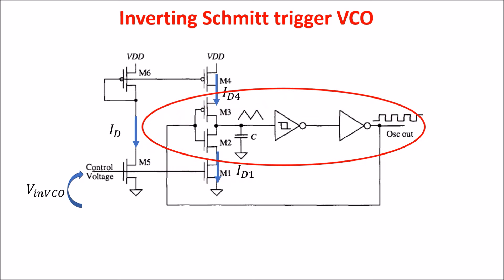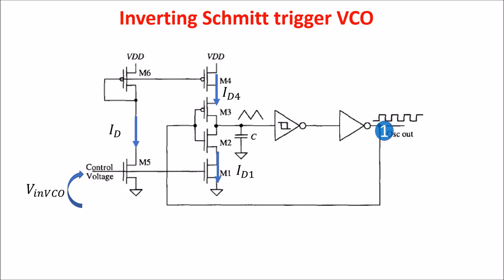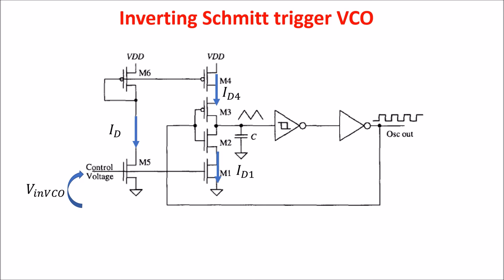Looking at this portion of the circuit, we have basically three inverters in series — one of which is the Schmitt Trigger — plus positive feedback. This is similar to a ring oscillator, which is an unstable circuit: when the output is high, the feedback drives the input of the first inverter high, so its output is low, the Schmitt Trigger output goes high, changing the output to low, and so on. The circuit is unstable, but it maintains this instability through the Schmitt Trigger and the capacitor, which needs some time to reach the Schmitt Trigger switching points.